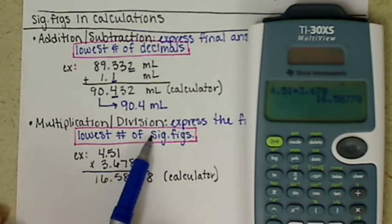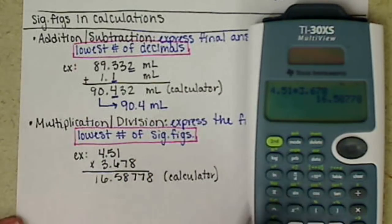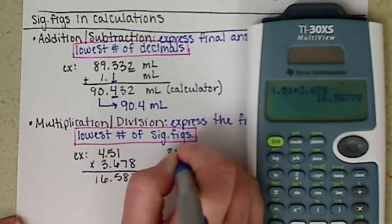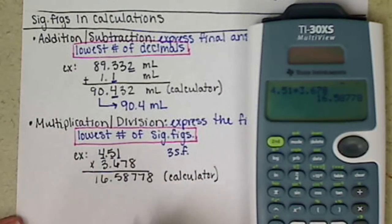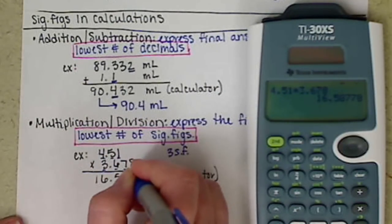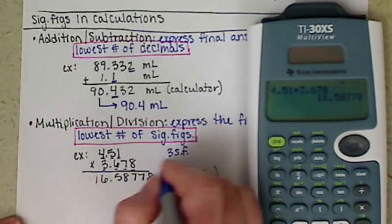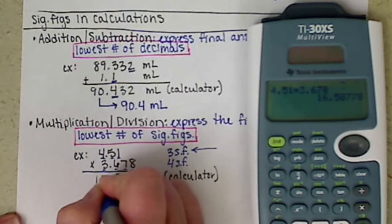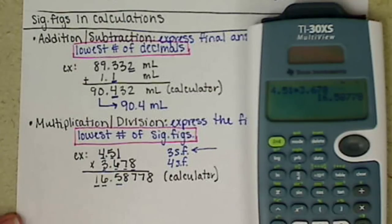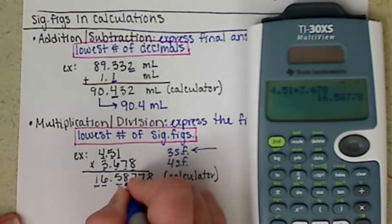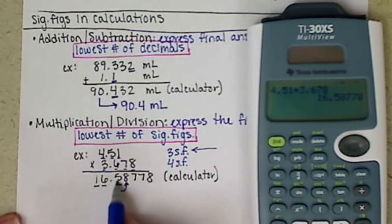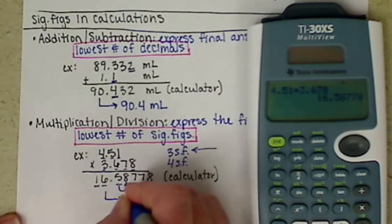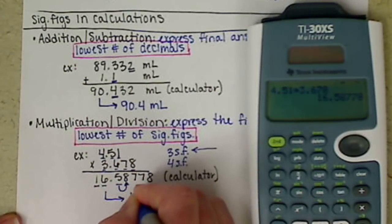So we want to go to the lowest number of sig figs. So we look to our first number, this has 3 sig figs, the 4, the 5, and the 1. Our second number has 4 sig figs, so we have the 3, 6, 7, 8. So our lowest number of sig figs comes from our first number, so we want to round off our answer to 3 significant figures. So we have the 1, the 6, and the 5. And again, don't forget to round appropriately. We have an 8 next to the 5, so we need to round that 5 up. So our final scientific answer would be 16.6.